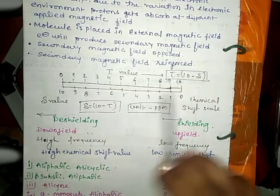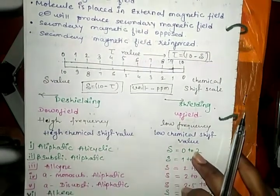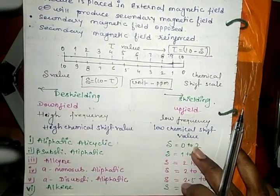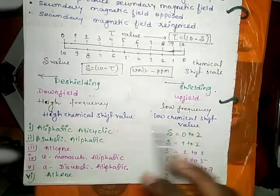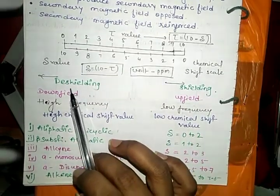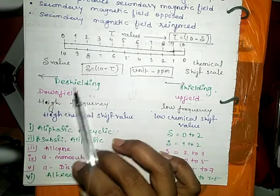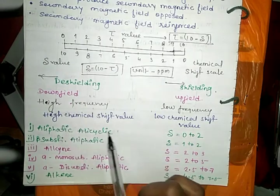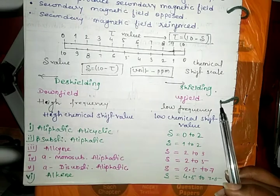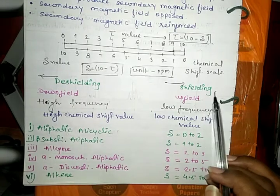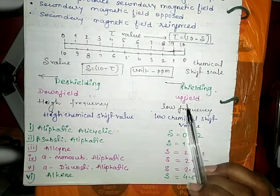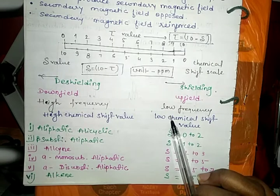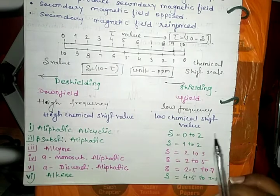When we find tau value: tau equals 10 minus delta value, so both are opposite to each other. Next we see deshielding and shielding. When molecule is going in deshielding, then it is downfield and has high frequency and high chemical shift value. When molecule is going in shielding, then this is upfield having low frequency and low chemical shift value.